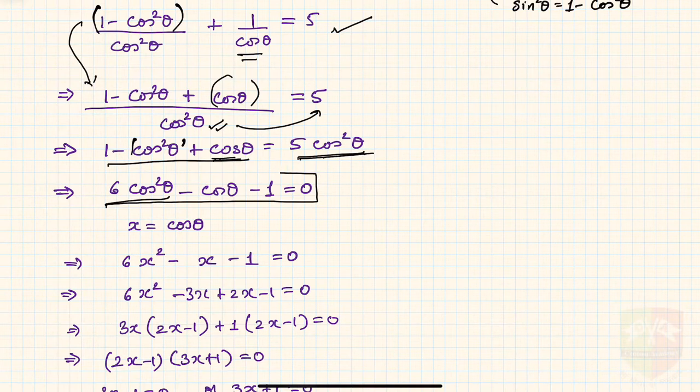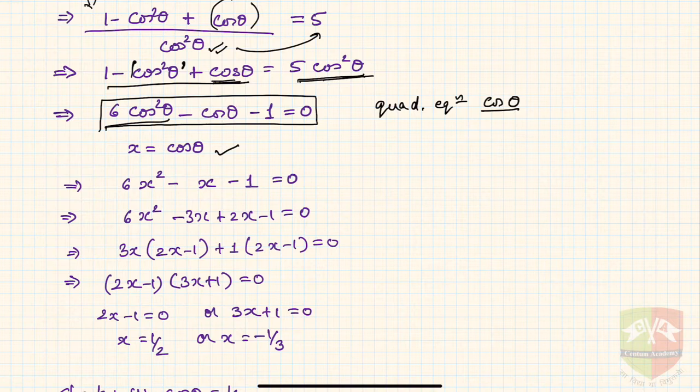This is a quadratic equation in cosθ. Let us assume cosθ = x. Hence the equation becomes 6x² - x - 1 = 0.